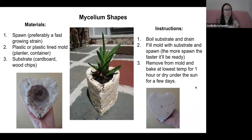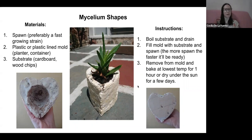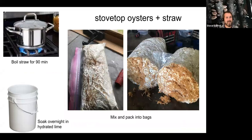Just like making a mycelium block you want to fruit, I boiled the substrate, drained it, then filled the mold with substrate and spawn. The more spawn you use, the faster it will be ready. Carefully remove it from the mold, then bake it at the lowest temperature or dry it under the sun for a few days. It's a great activity to do with kids or students to show how mycelium grows and the fungi life cycle.